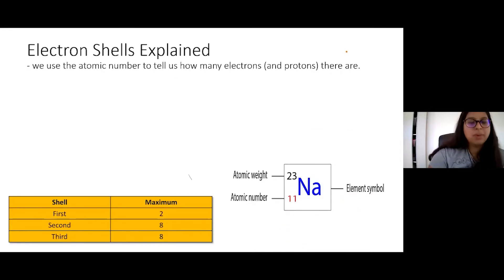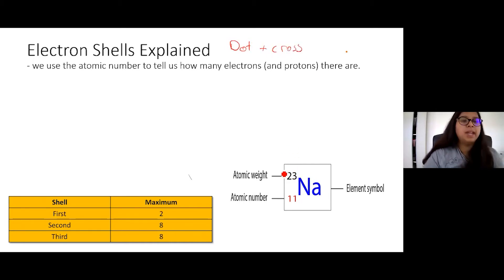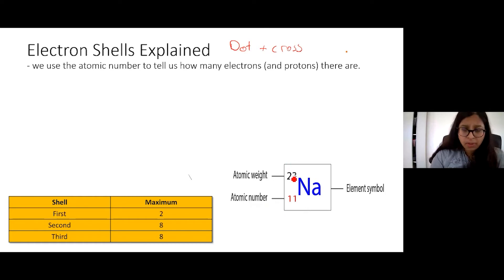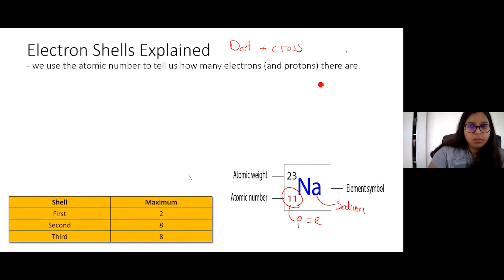Let's do an example, because this can be tricky. An exam question might ask you to draw what the electron structure looks like — we call this a dot-and-cross diagram. To figure out how many electrons we need, we look at the atomic number on the periodic table. The atomic number tells you how many electrons and protons there are. Sodium, Na, has 11 electrons and 11 protons.